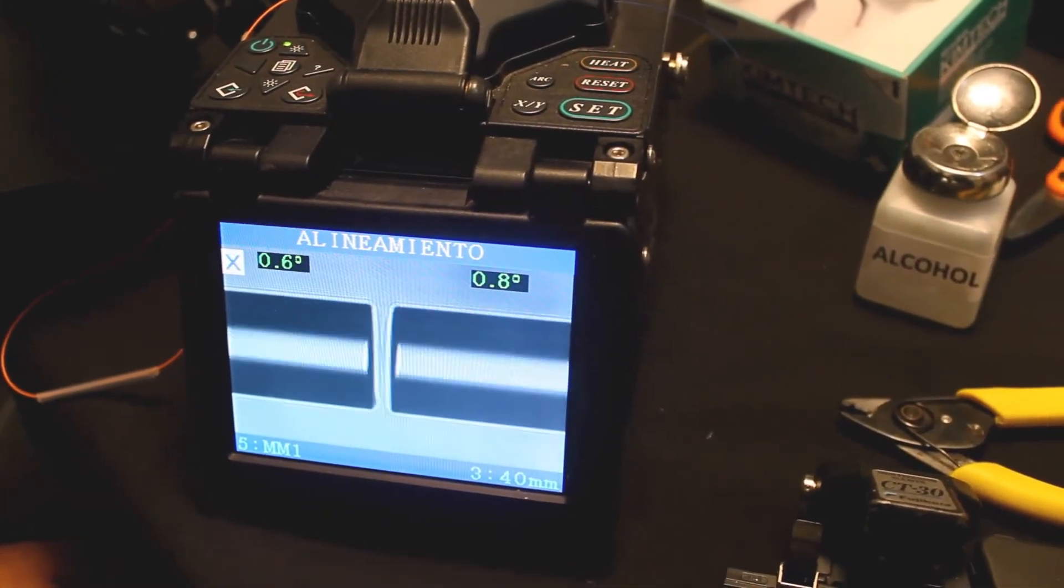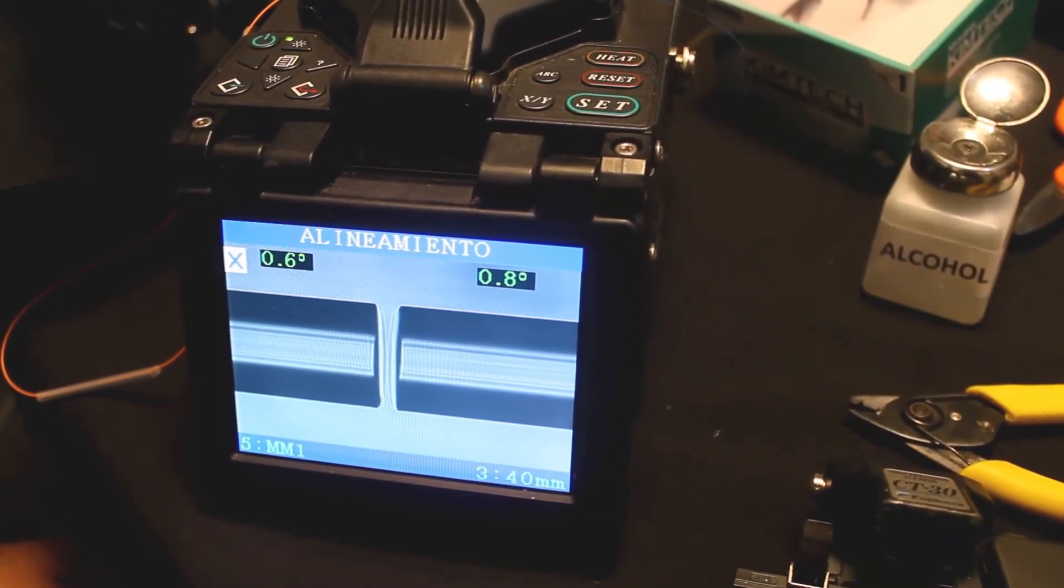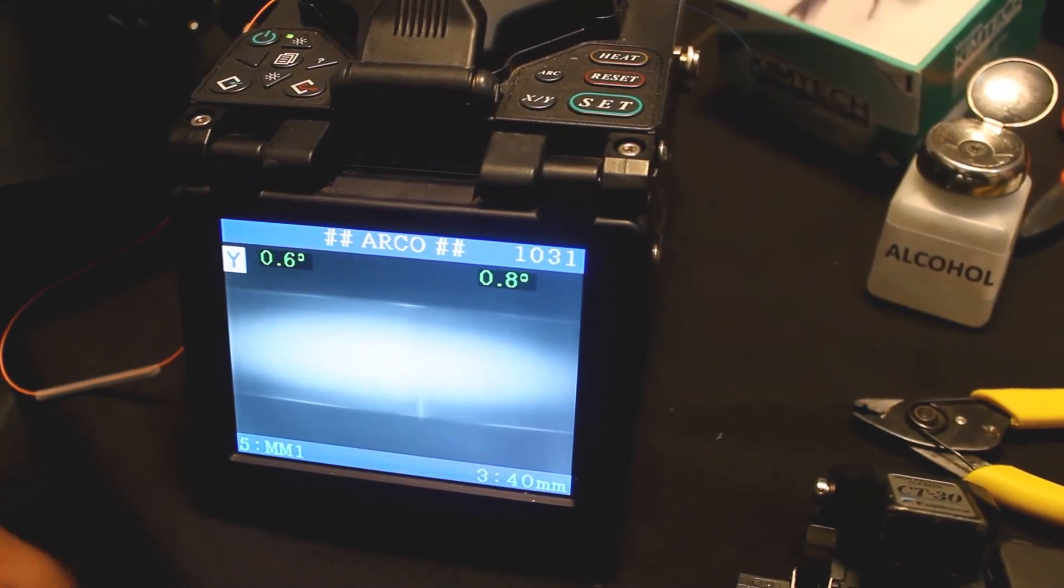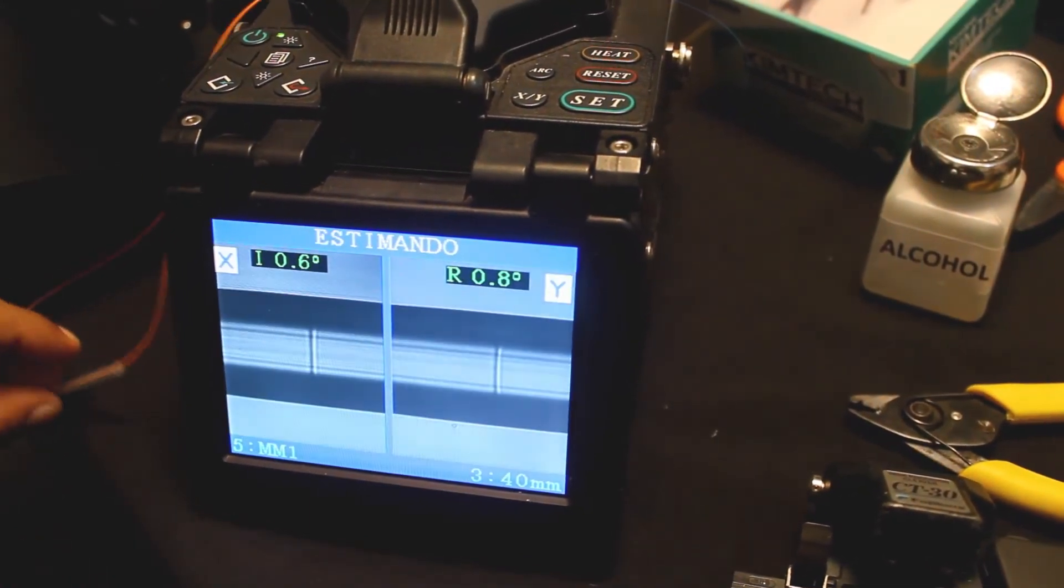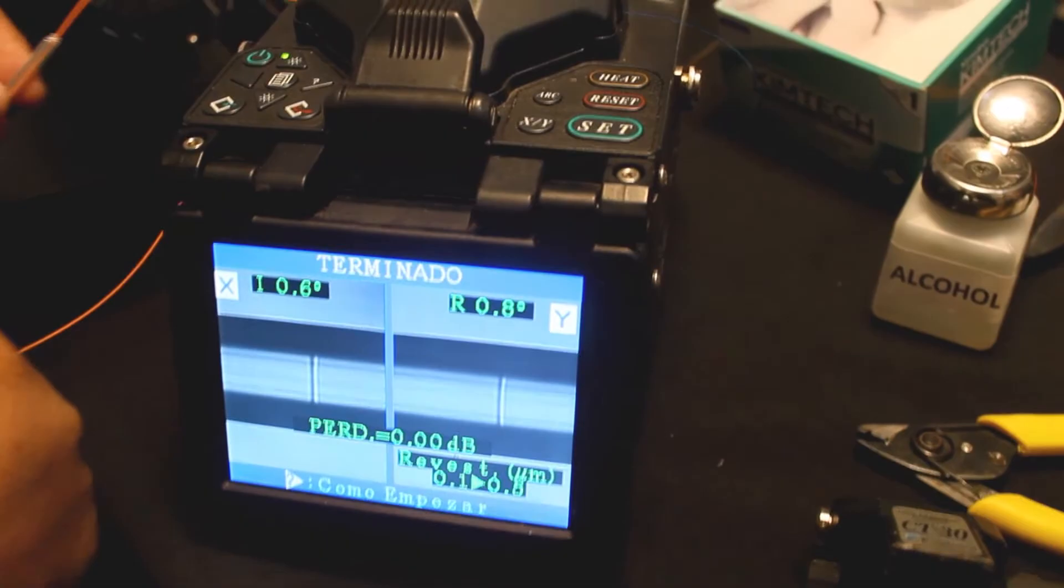Once the two fibers are inside the fusion splicer, close the lid. Look at the device's screen. You'll see it show you as the fibers' cores align. Then the fusion automatically begins.